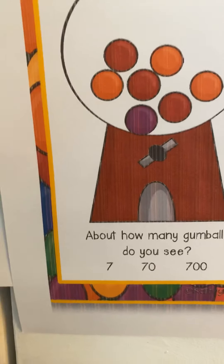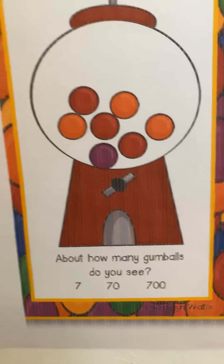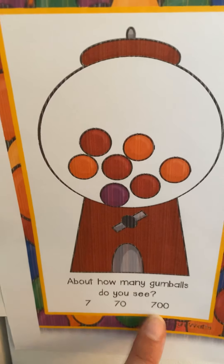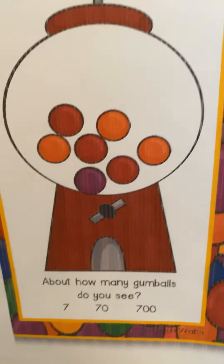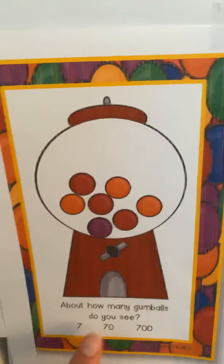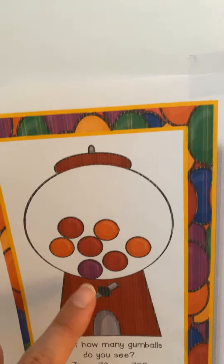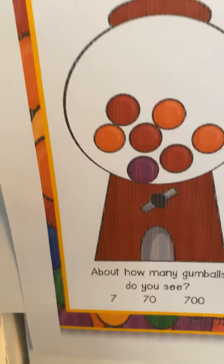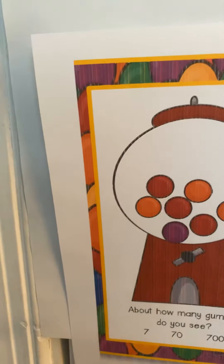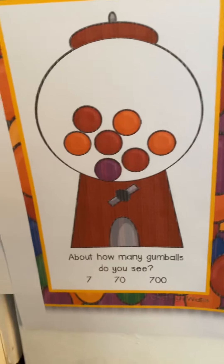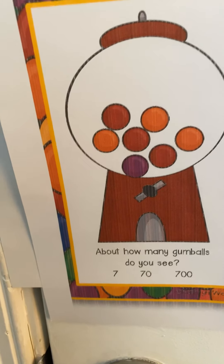And then the last one. About how many gumballs do you see? Seven, seventy, or seven hundred? Seven hundred is ridiculous — that is just way too much. That doesn't even make sense. So seventy or seven? I can look right here, and from all of our number talks I can tell you: I see three and two, which is five, and then two more is seven. I was able to see the number seven pretty quickly after all those number talks we've done.